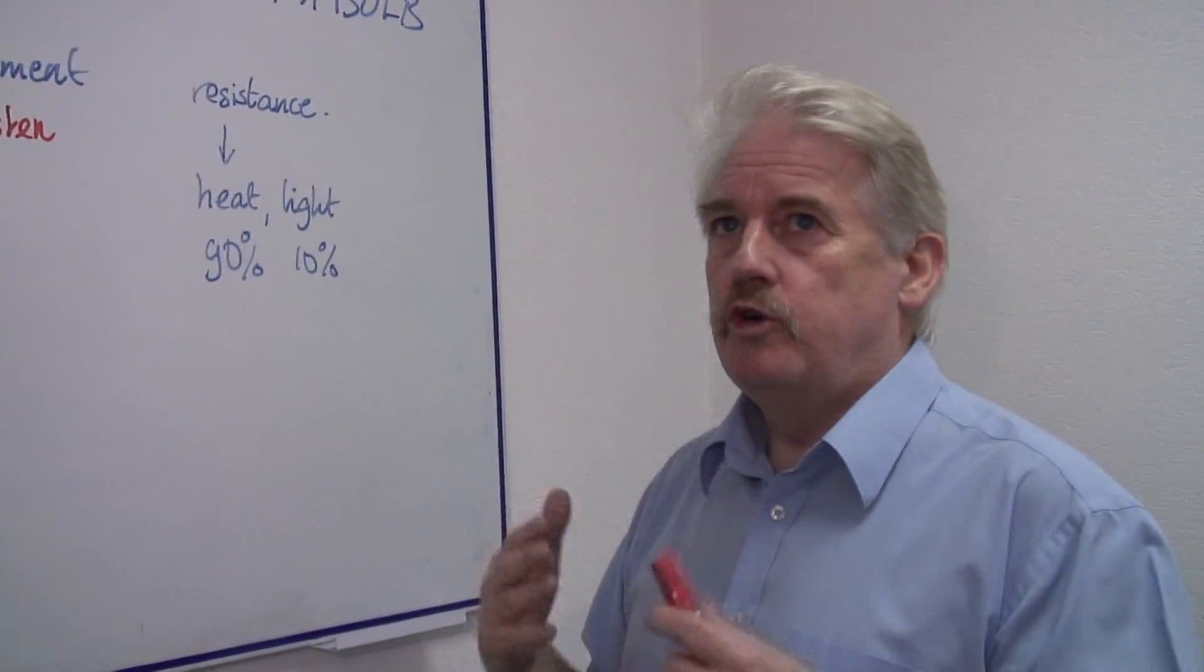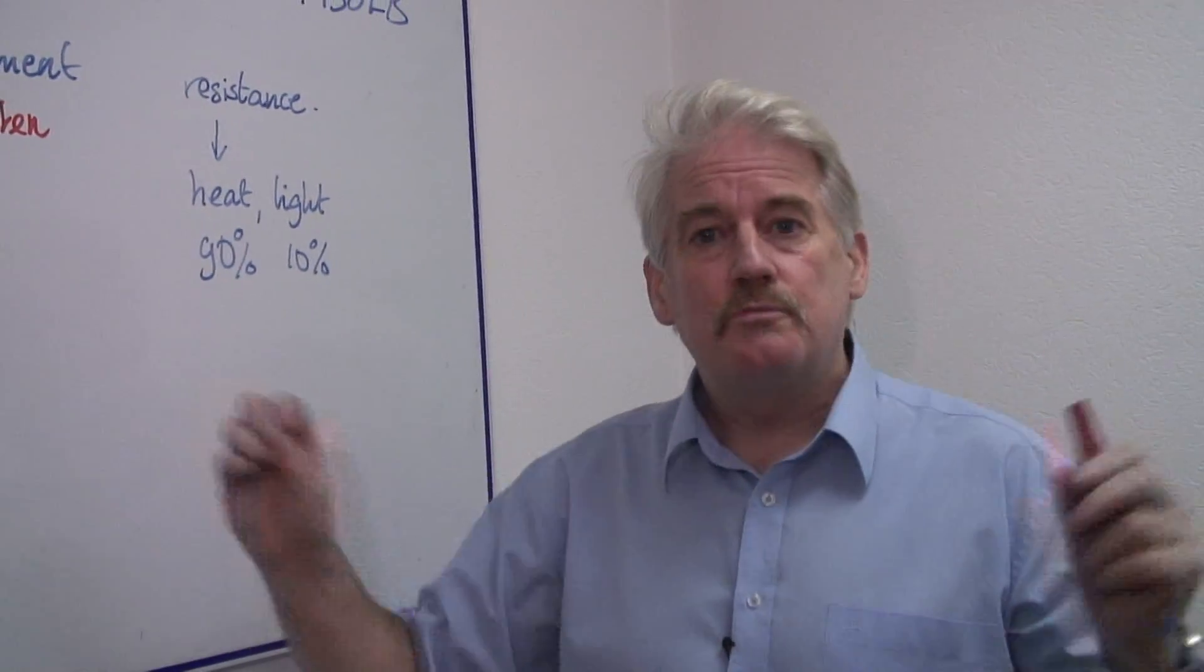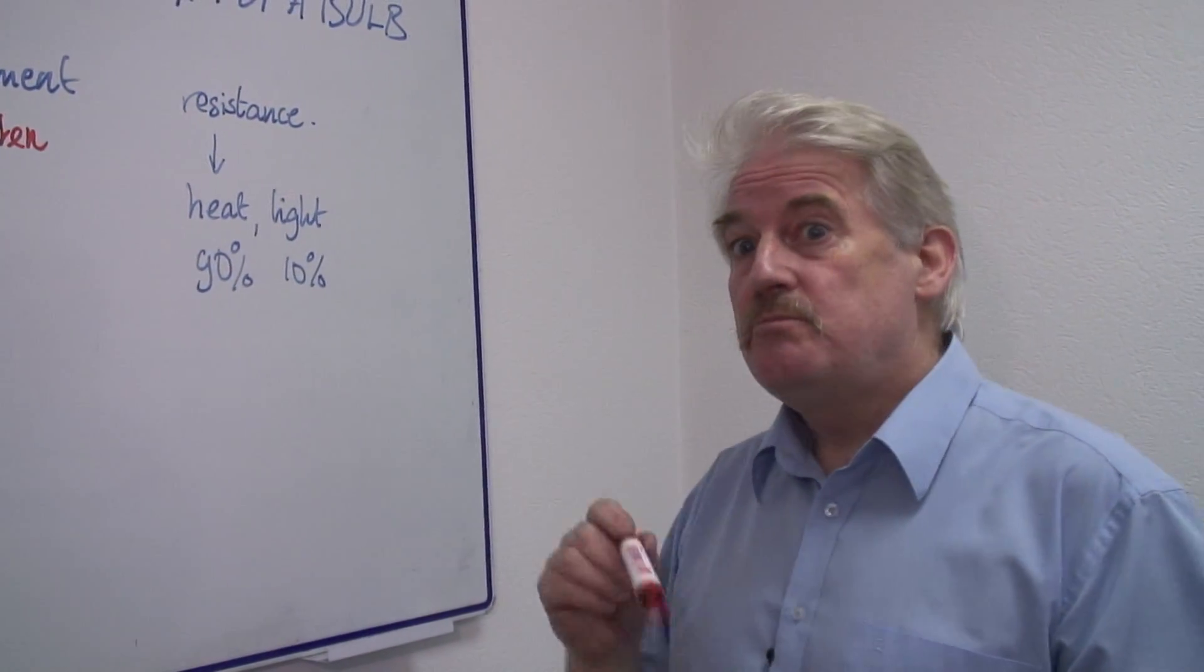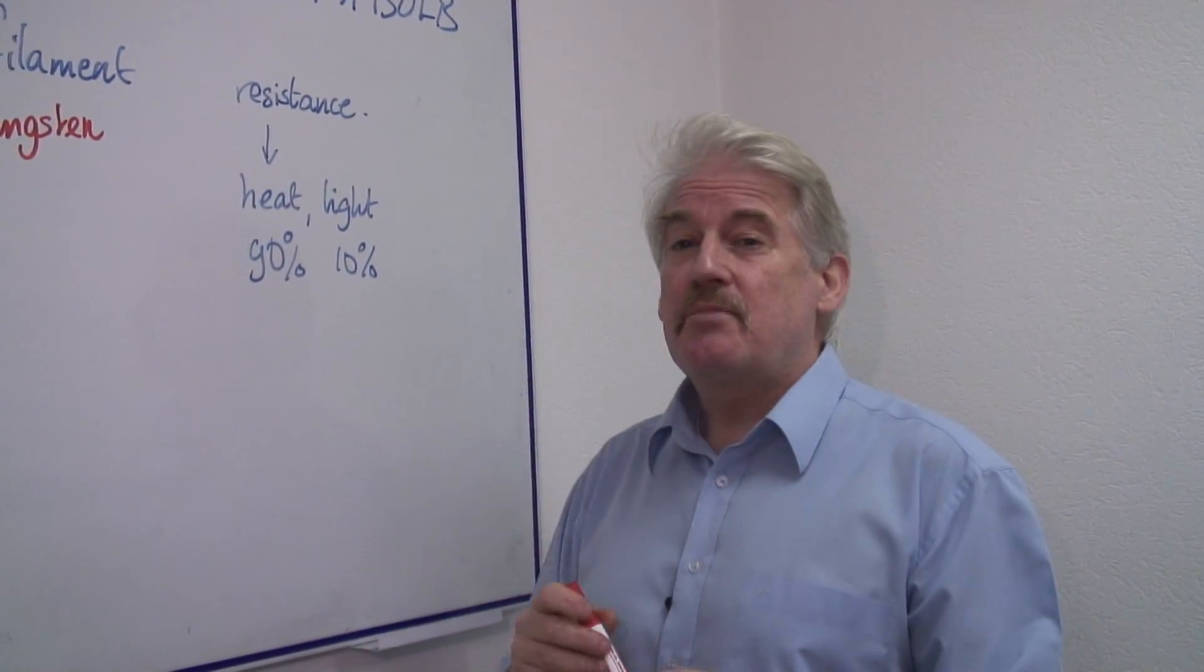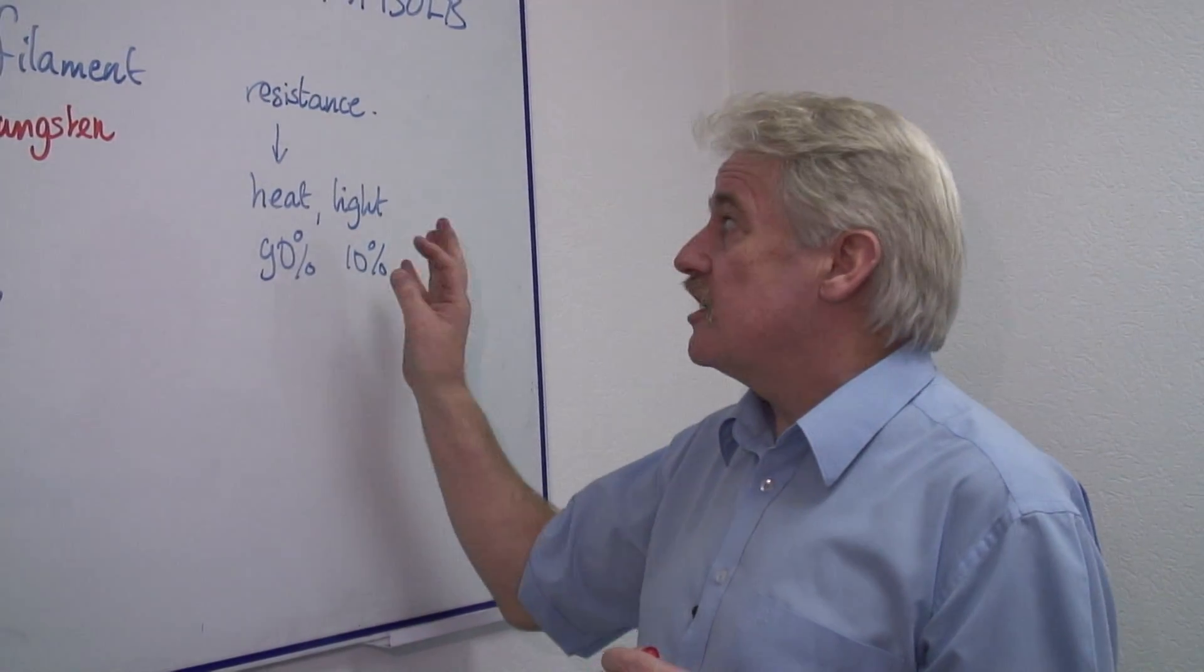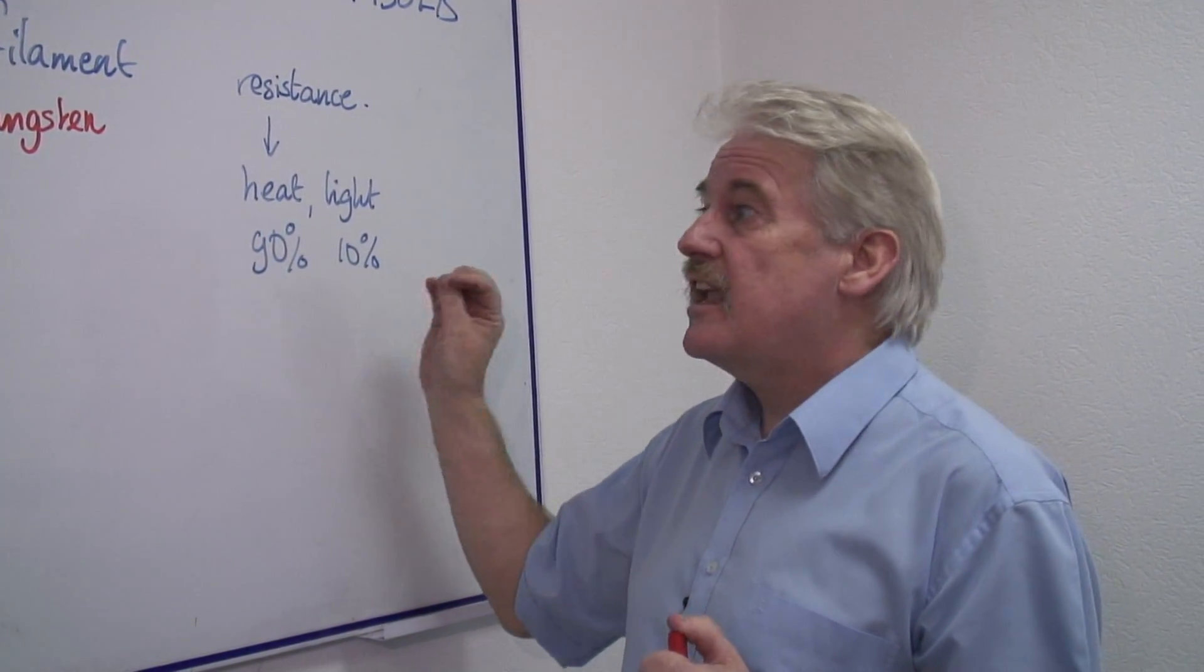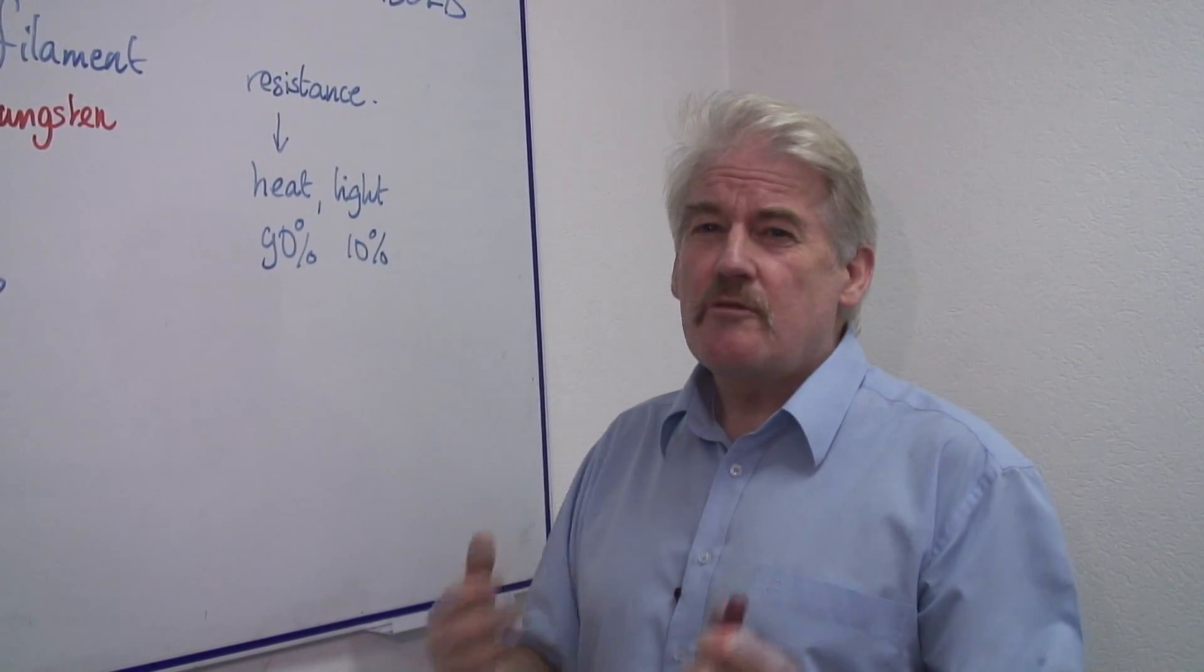This is why the cool lamps, the type of long tubes that you get nowadays are much better because nearly 15% of them, 15% of the energy is actually produced as heat and 65-70% as light so they are much more efficient.